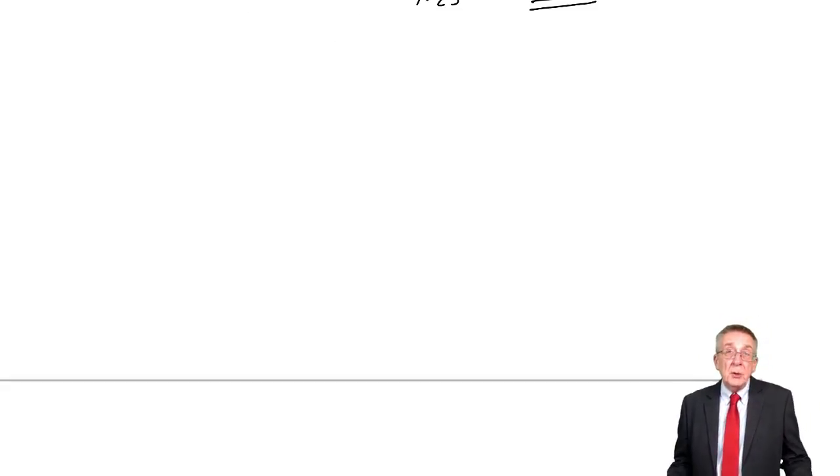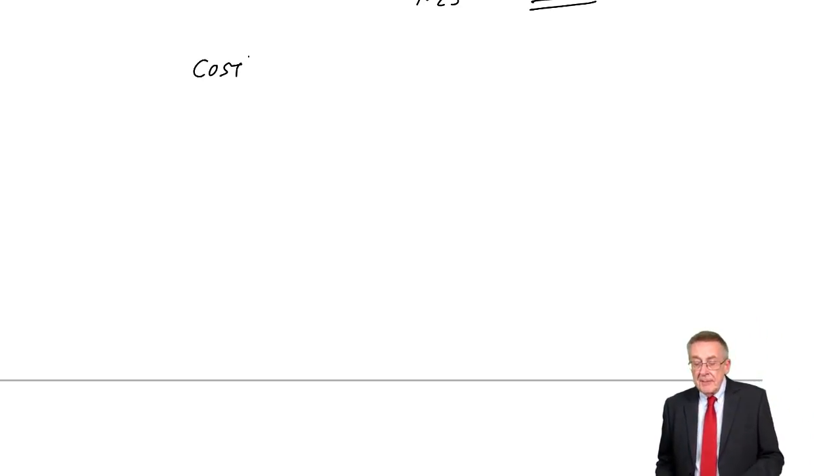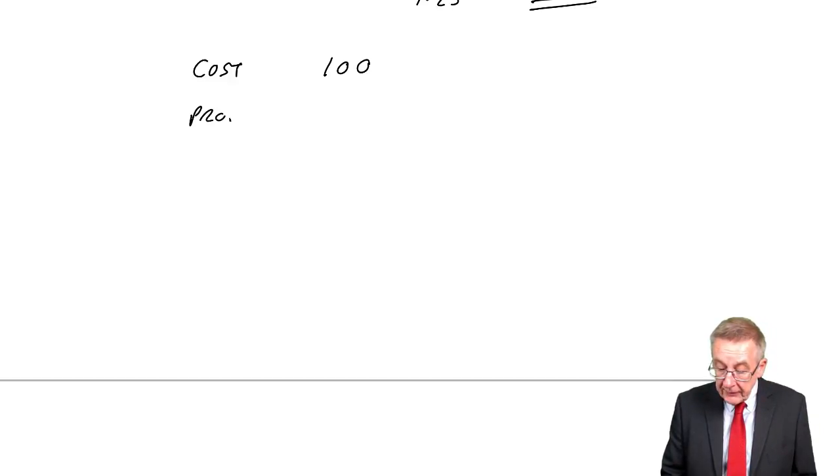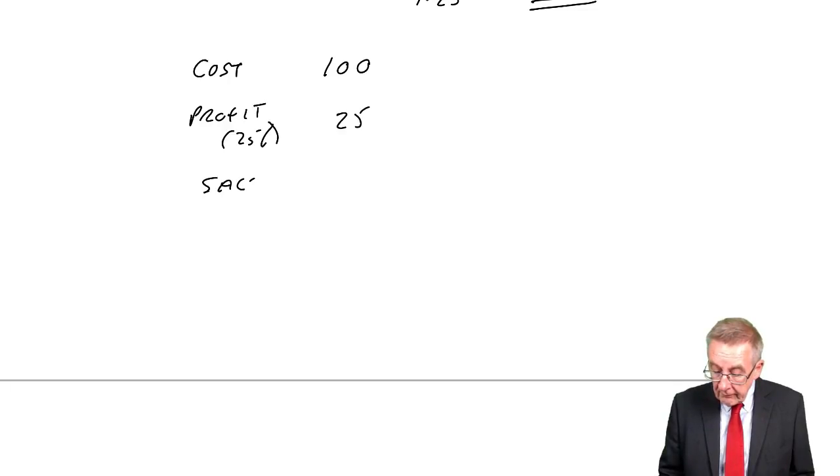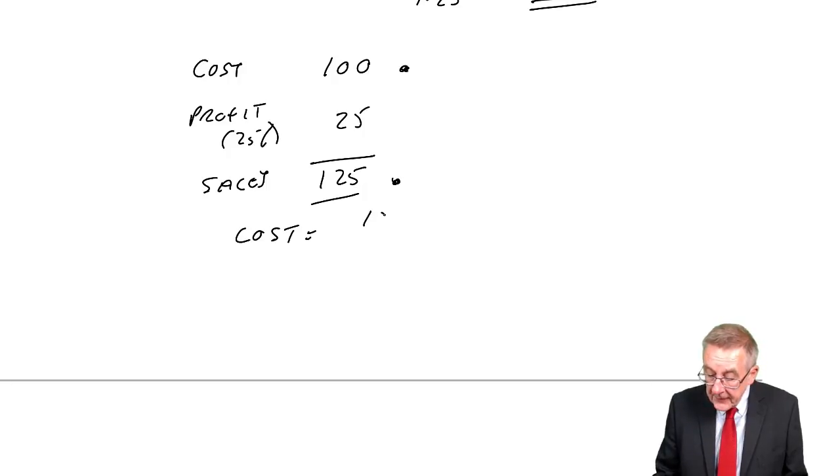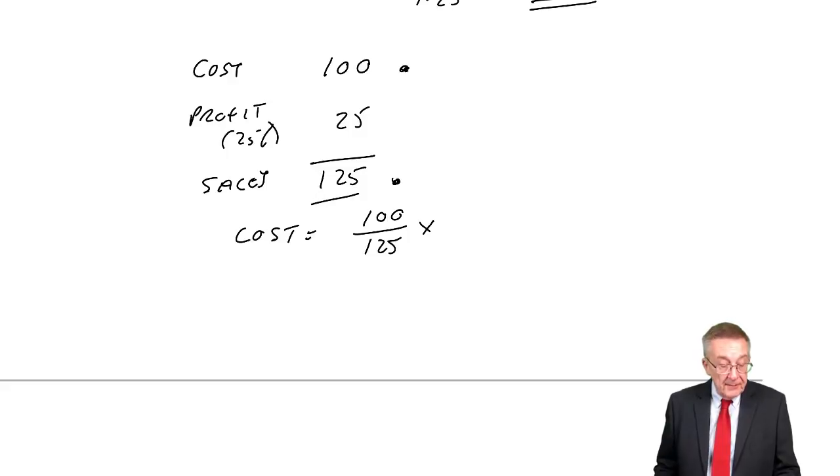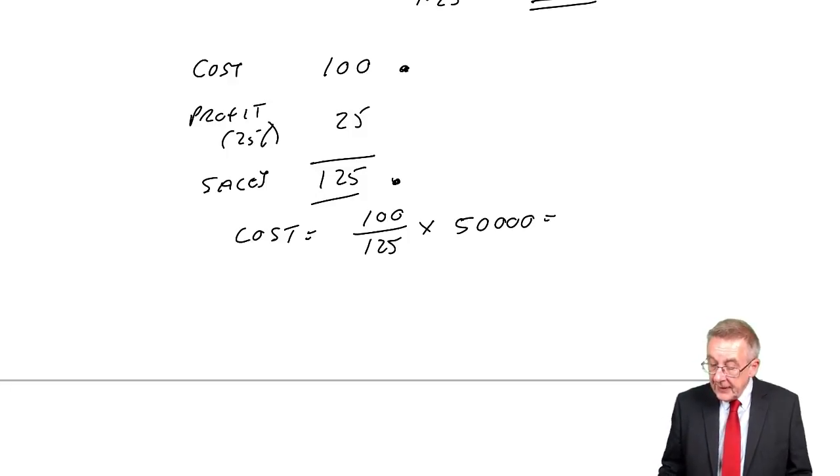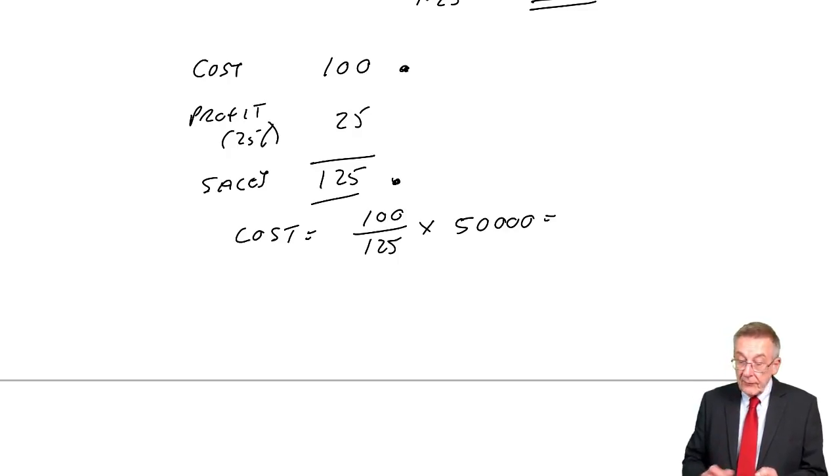Another way you can do it, if you don't like using Xs, you could say, forget the actual figures for the moment. You could say, for every 100 cost, we're going to add on a profit, a markup of 25%. And the sales will therefore be 125. So for every 100 cost, sales will be 125. Or putting it the other way round, for every 125 sales, the cost will be 100. So the cost will always be 100 out of 125 of the sales. And if the sales are 50,000, well, 100 divided by 125 is 40,000.